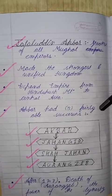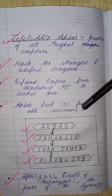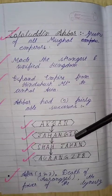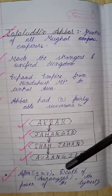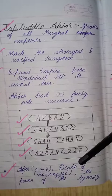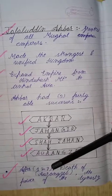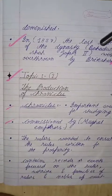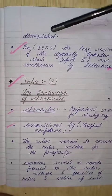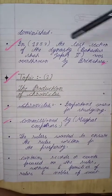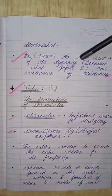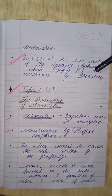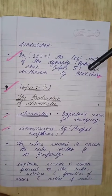Akbar had three favorable successors: Jahangir, then Shah Jahan, then Aurangzeb. After the death of Aurangzeb in the year 1707, the power of the dynasty diminished, and in 1857 the last ruler of the dynasty, Bahadur Shah Zafar II, was overthrown by the British. This is how the Mughal Empire finished.